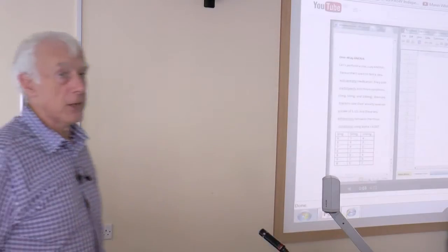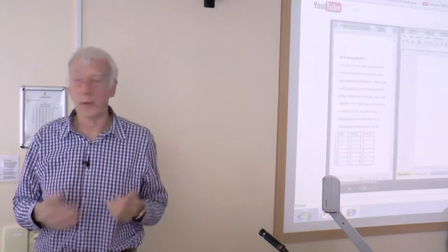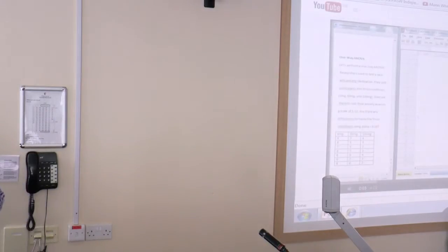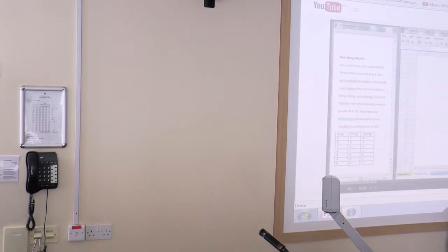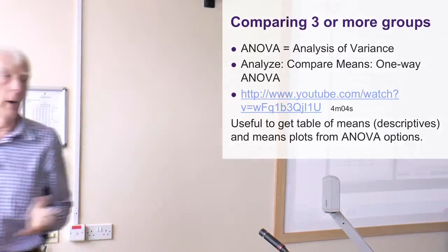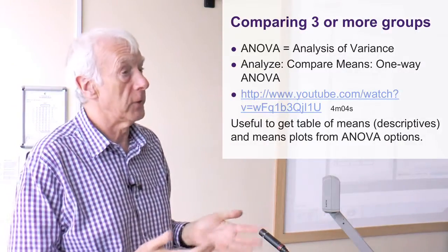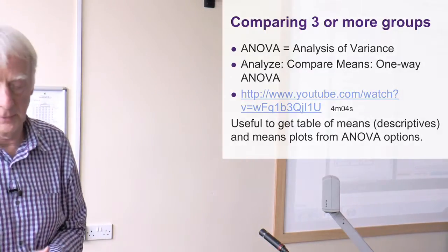Okay, the one thing I'd say there is I would click a box that you didn't click to actually give the means, to give the descriptive statistics, because then you can see which dosage was the better and which was the worst. So I would always include a table of means or descriptive statistics of some kind, in addition to calculating the statistic.